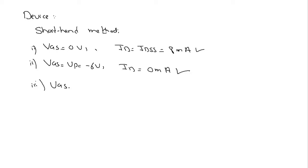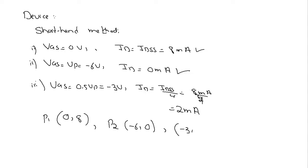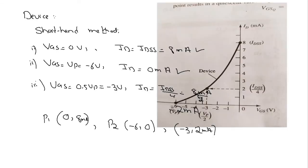The third point is when VGS = 0.5 VP = -3 volts. Then ID = IDSS / 4 = 8 mA / 4 = 2 milliamperes. So the three points are: point one (0 V, 8 mA), point two (-6 V, 0 mA), and point three (-3 V, 2 mA).